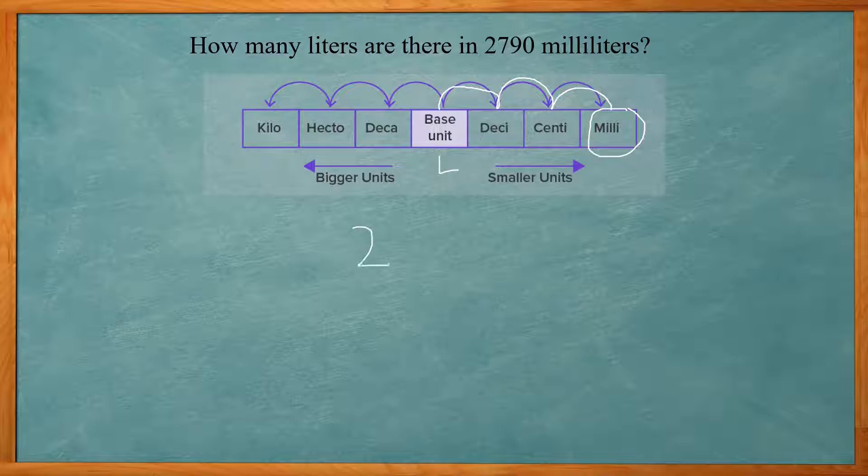So if we get 2,790, right now our decimal is at the end here. And we're going to move it three places to the left. One, two, three.